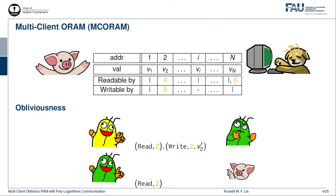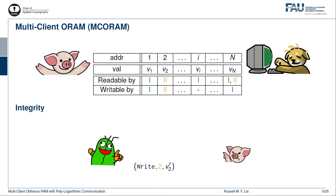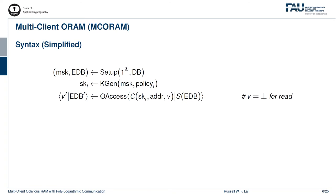This also means that client 1 should not be able to read address 2. An MC ORAM should also provide integrity. For example, client 1 should not be able to override address 2. A bit more formally, an MC ORAM consists of a setup algorithm, a key generation algorithm, and an oblivious access protocol.